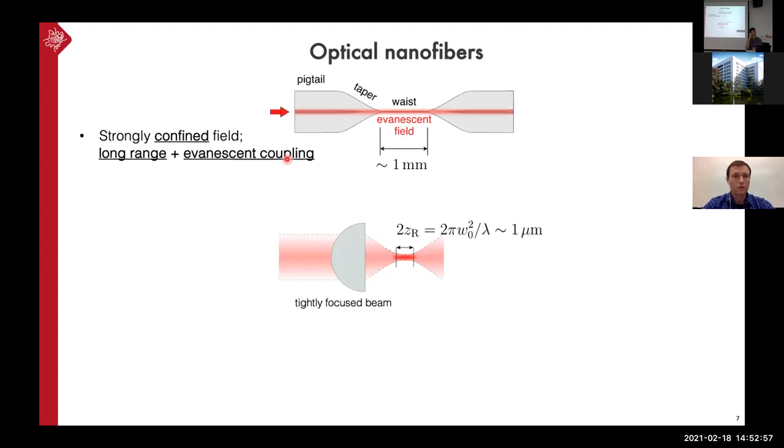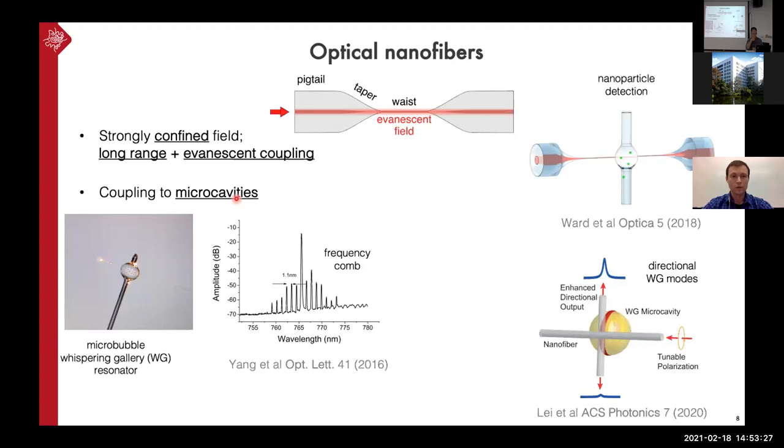So first of all, this field is strongly confined and it has long range compared to the tightly focused laser beam which is only limited to a short rayleigh range. And this field is allowing to achieve evanescent coupling. So if we place next to the waist some quantum emitter, for example, we can address it with this nanofiber waveguide. And we can also, through this evanescent coupling, we can couple light to micro cavities and excite whispering gallery modes.